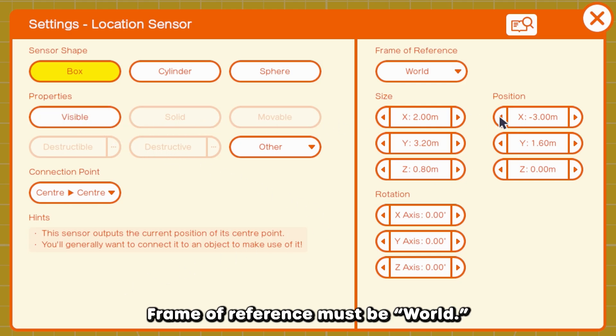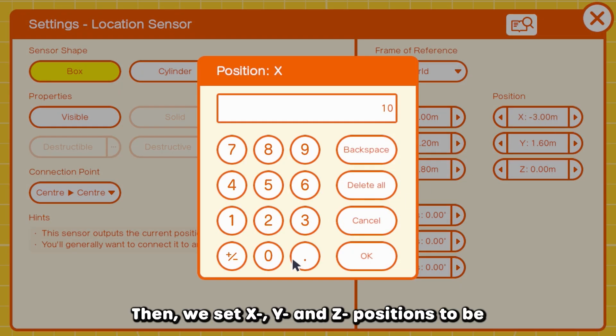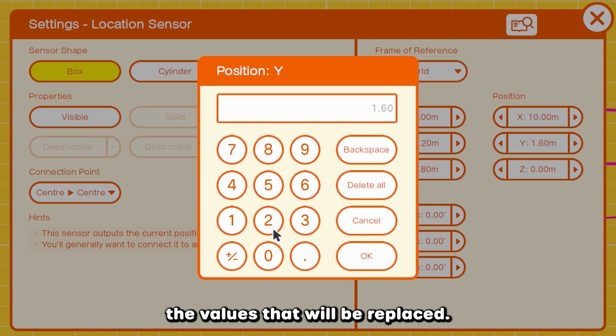Frame of reference must be world. Then we set X, Y, and Z positions to be the values that will be replaced.